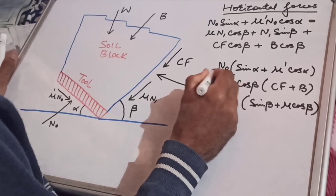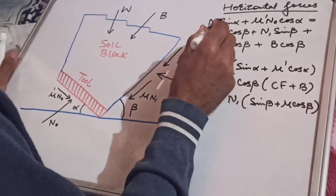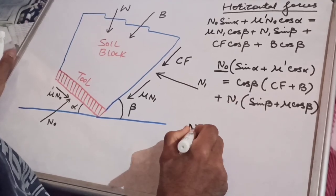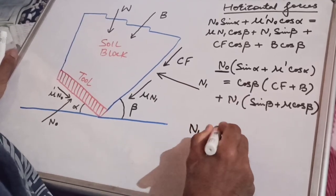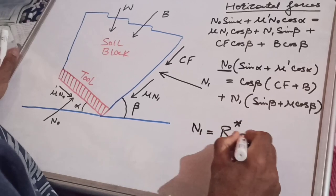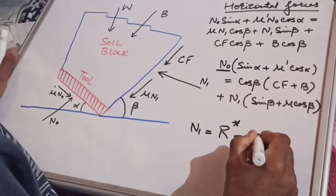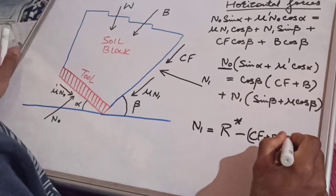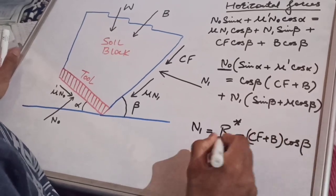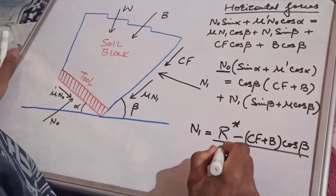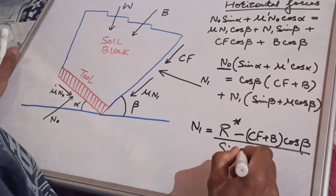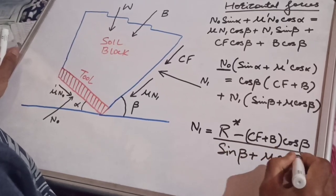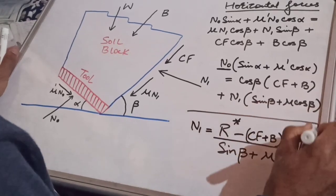Having obtained the value of N0 from the previous equation, we substitute it here to get N1. The value of N1 = [R* − (Cf + B)×cos(beta)] / (sin(beta) + mu×cos(beta)). So we now have the values of both normal forces N0 and N1.